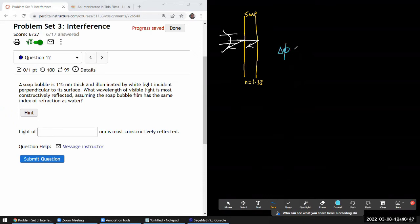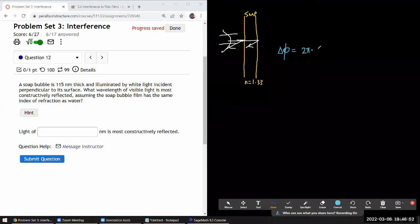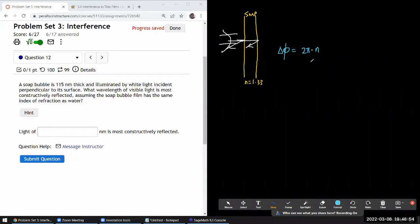So whenever the phase difference is 2π, one full cycle, or some multiple of that integer multiple of that one full cycle, that's where you get constructive interference. And when the phase difference is equal to some odd multiple of π, so I guess one way to express it is (2n+1)π.